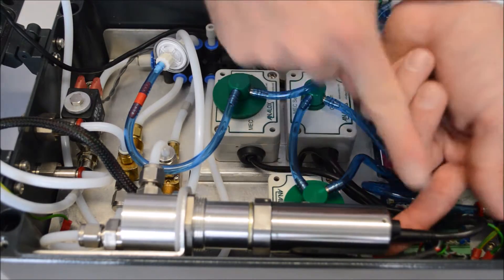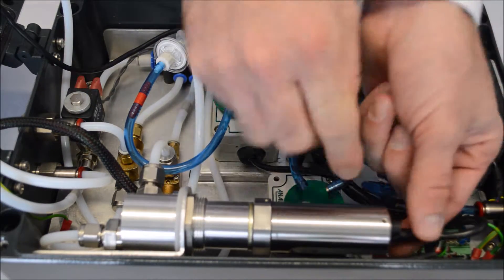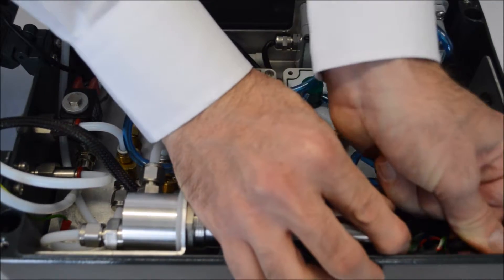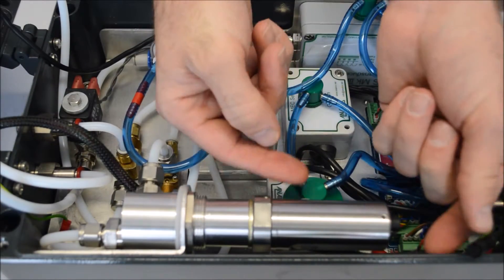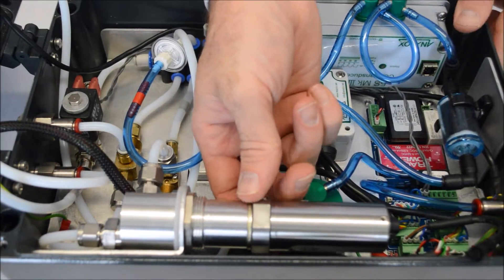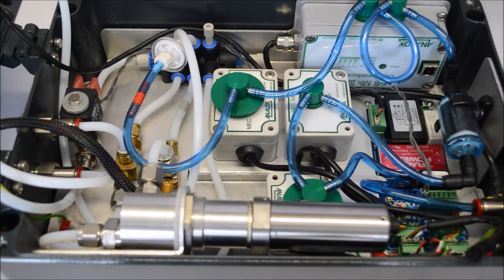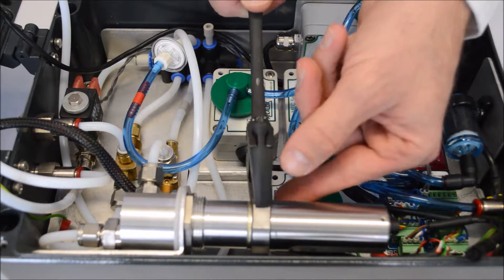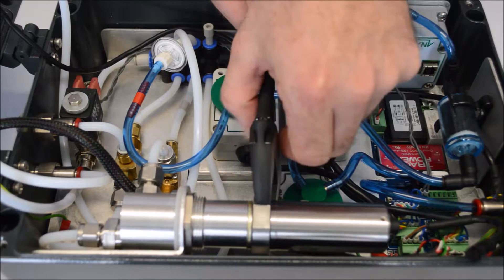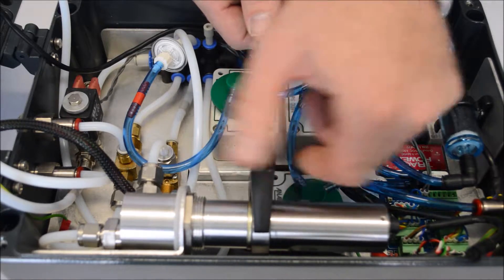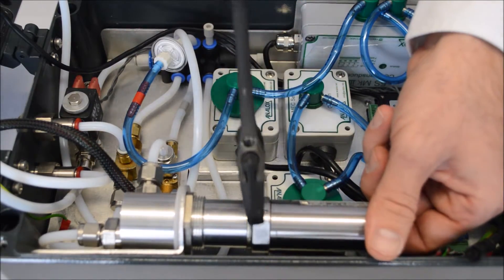So initially we need to disconnect the cable off the end of the unit by pulling directly in that direction, and then we need to remove the dew point sensor using a 30mm spanner or an adjustable spanner. Connect on and gently slacken it off.